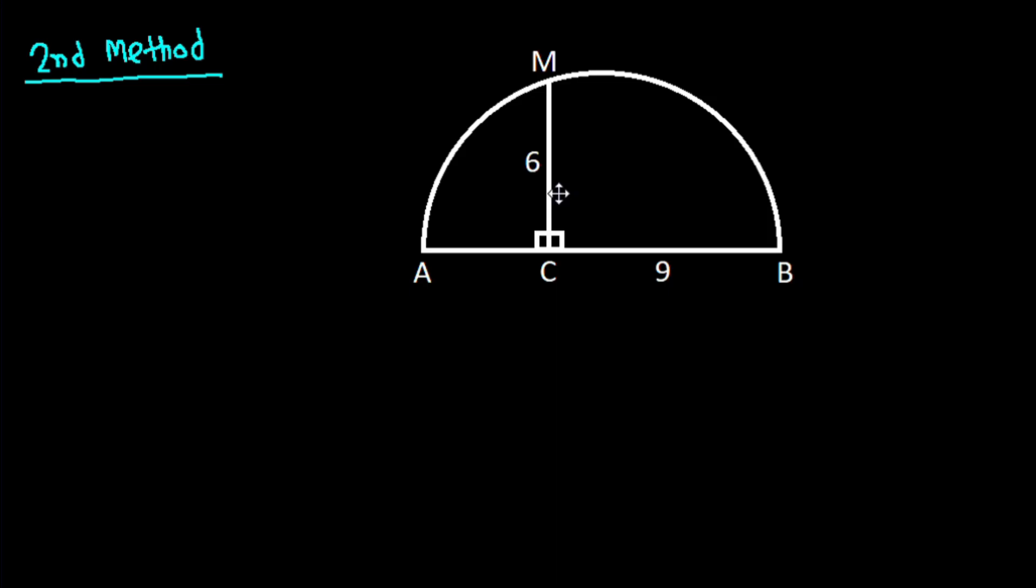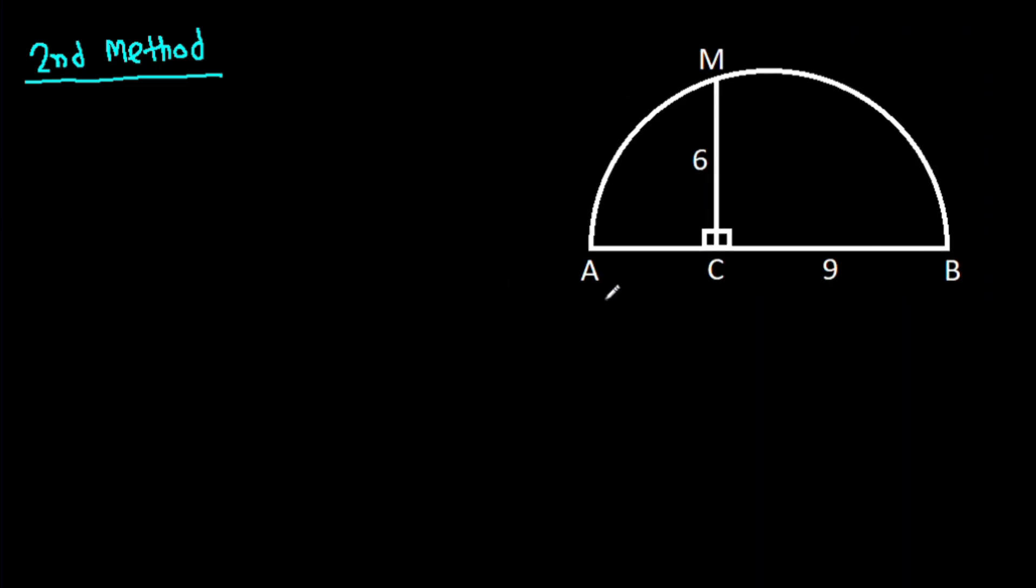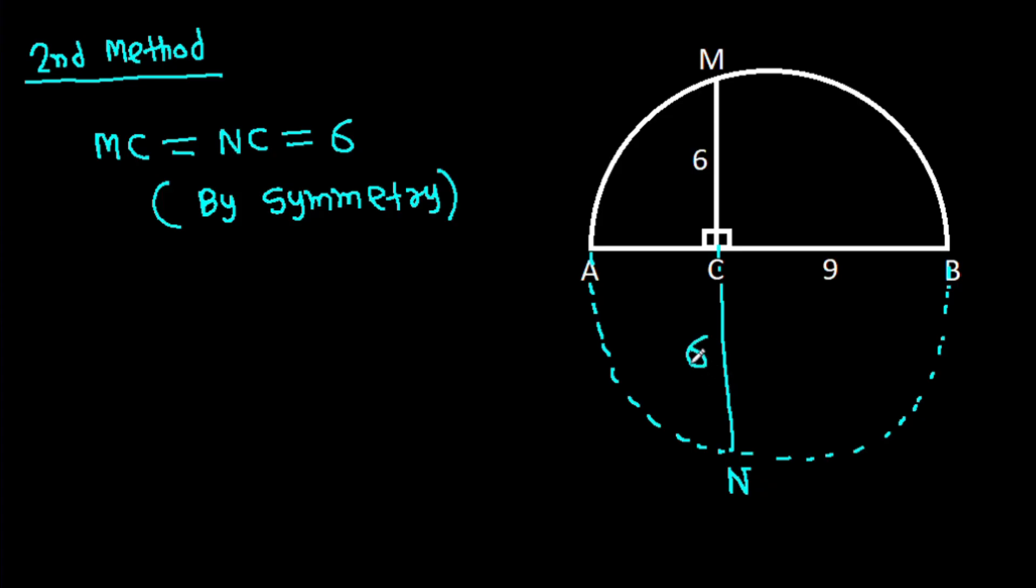And the second method: if we complete the circle and extend MC, suppose this point is N. Then MC will be equal to NC, that will be 6 by symmetry. NC will be 6.